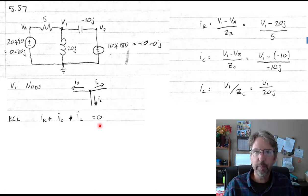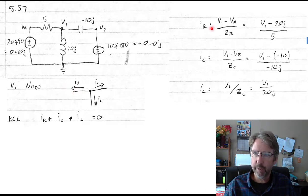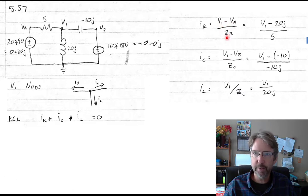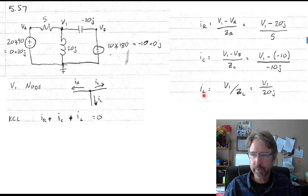We use Ohm's law but now with impedances. It's always the voltage at the tail of the arrow minus the voltage at the head of the arrow, divided by the impedance in between. For all of these, the tail of the arrow is V1, so they're all V1 minus something. IR is V1 minus VA divided by the resistance. IC is V1 minus VB divided by the impedance of the capacitor. The current through the inductor IL is V1 minus 0 — because it's connected to ground — divided by the impedance of the inductor.